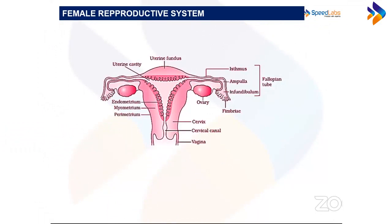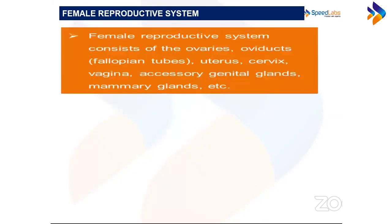Looking at the diagram, we can identify the parts: two ovaries, two fallopian tubes, the uterus, cervix, and vagina. The oviduct has three parts — infundibulum, ampulla, and isthmus — which were explained in the previous class, and the slides show the different parts again.